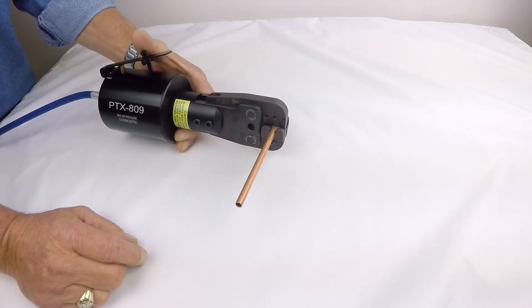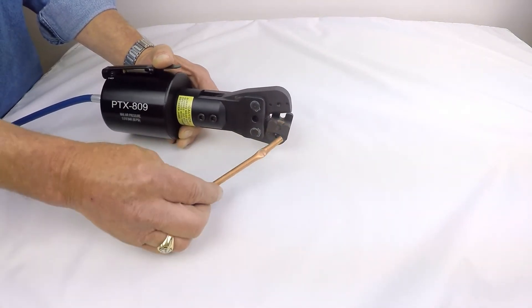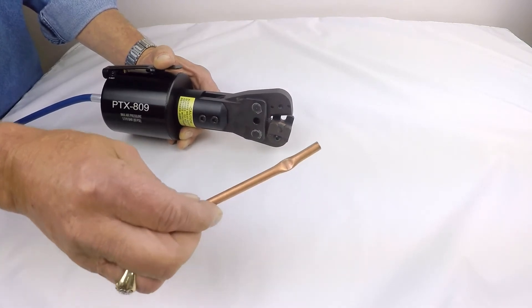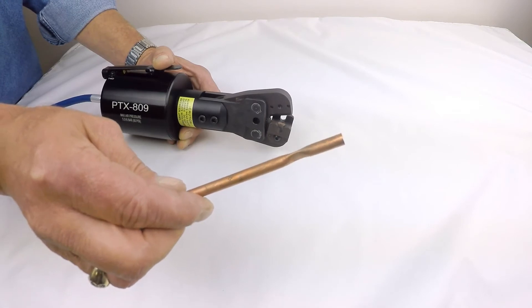Once the soldering is completed, the tool is activated and the tube is removed. That's the profile with the jaws on the PTX 809.